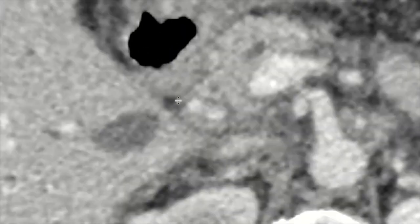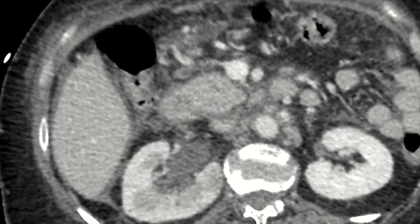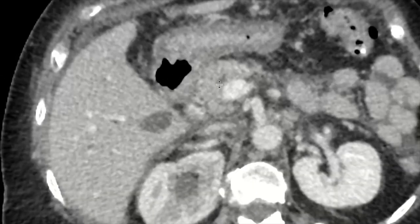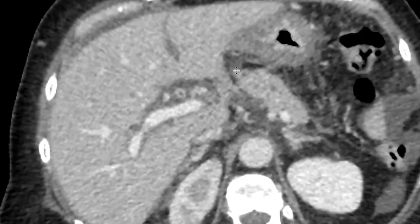This right here is the common bile duct — we can see it's a little bit thickened here, and then it runs into the duodenum.